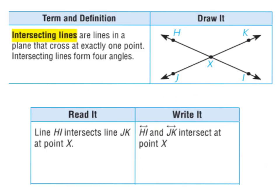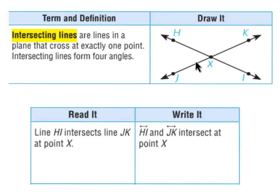Now I'm going to teach you a few vocabulary words. The first word is intersecting lines. Intersecting lines are lines in a plane that cross at exactly one point. Intersecting lines form four angles. For example, we have line HI and line JK. Notice how they cross at exactly the point X, and how they form four angles — an obtuse angle here and here, as well as an acute angle here and here. Therefore, this is an example of intersecting lines.